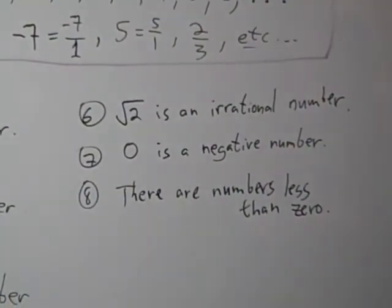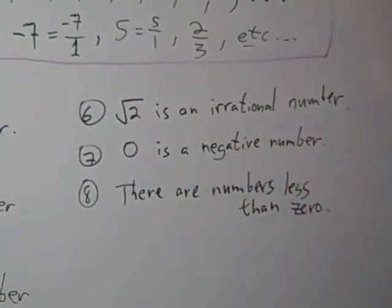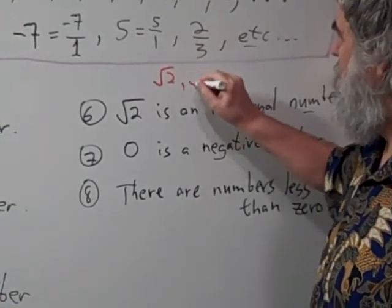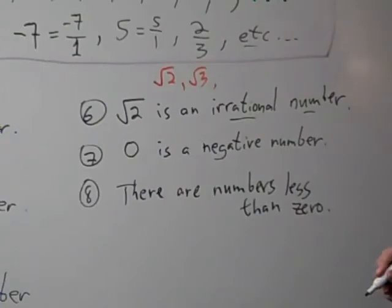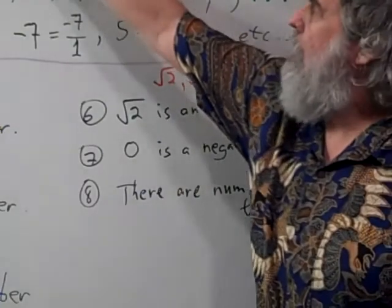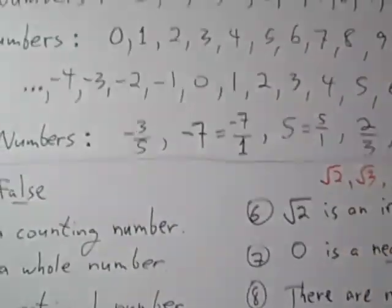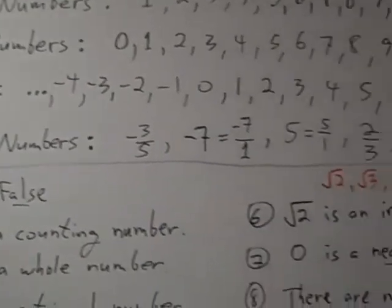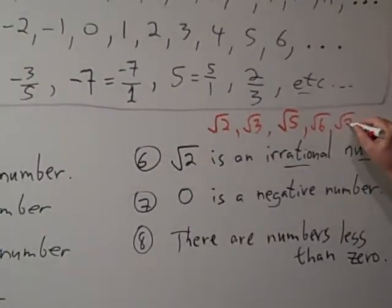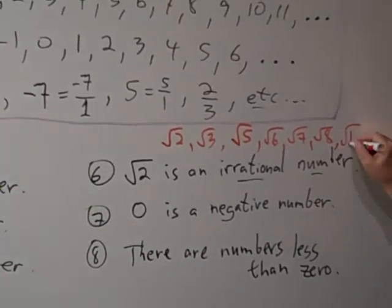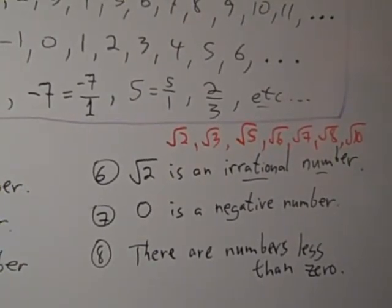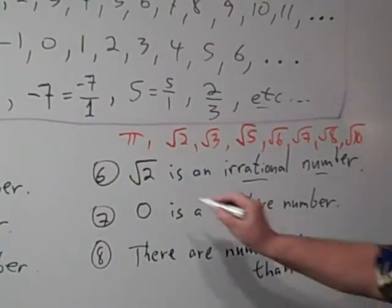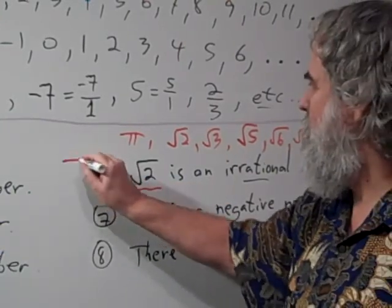Number 6 says the square root of 2 is an irrational number. Irrational numbers are numbers like the square root of 2 and the square root of 3. Not the square root of 4, because the square root of 4 equals 2, which is a counting number, whole number, integer, and rational number — but not irrational. The square root of 5, 6, 7, and 8 are irrational. Not the square root of 9, since that equals 3, but the square root of 10 is irrational. Other irrationals include pi. So the square root of 2 is an irrational number — this is true.